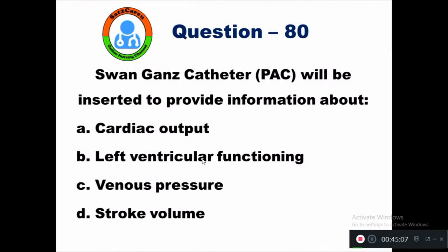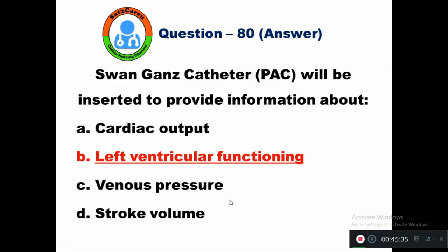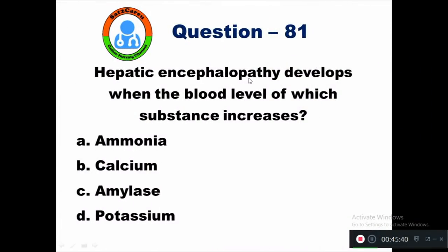Question 80: Swan-Ganz catheter will be inserted to provide information about — option A cardiac output, B left ventricular functioning, C venous pressure, D stroke volume. The right answer is left ventricular functioning.